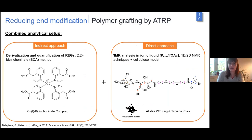Analytical confirmation is very challenging for end-wise modification. We used a combined setup: an indirect approach based on derivatization and quantification using the BCA assay, where the reducing end group reduces copper(II) to copper(I), which is detected spectrophotometrically. We combined this with direct solution state NMR analysis in ionic liquids done at University of Helsinki.